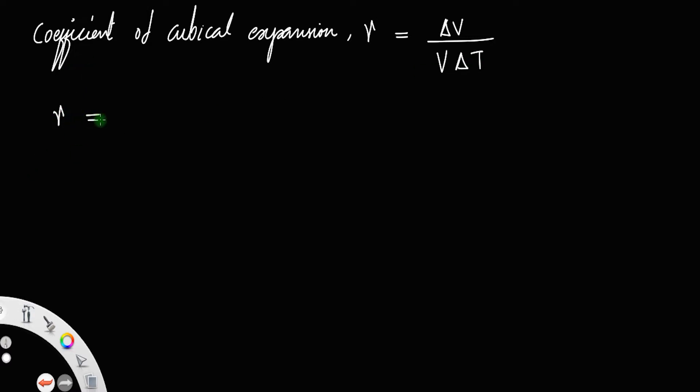Or gamma is equal to change in volume, that V dash be the final volume, so V' minus V, final volume minus initial volume, that is the change in volume divided by the original volume per unit rise in temperature.